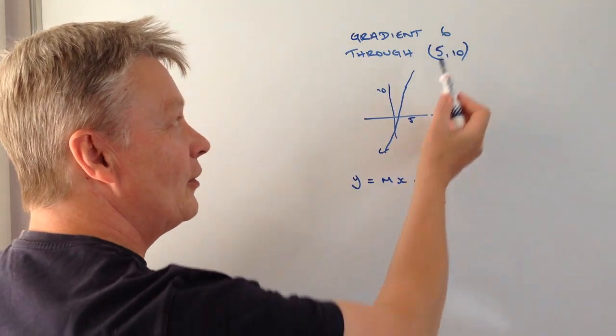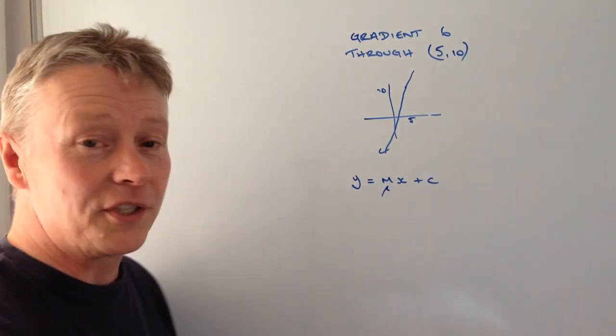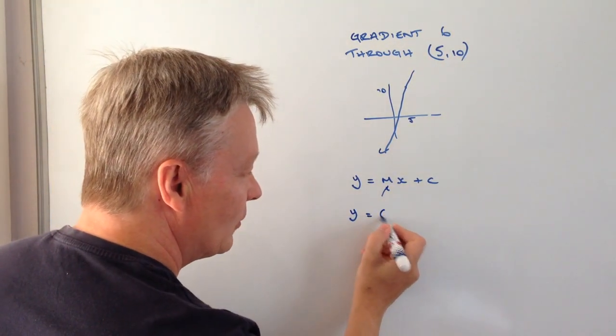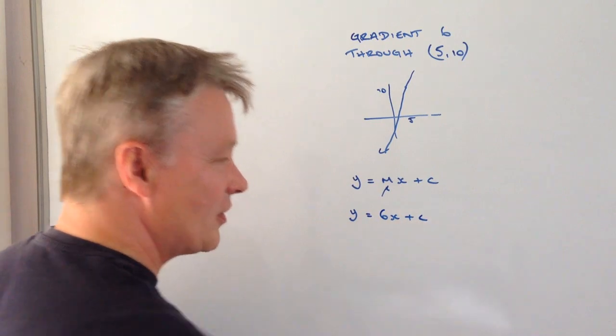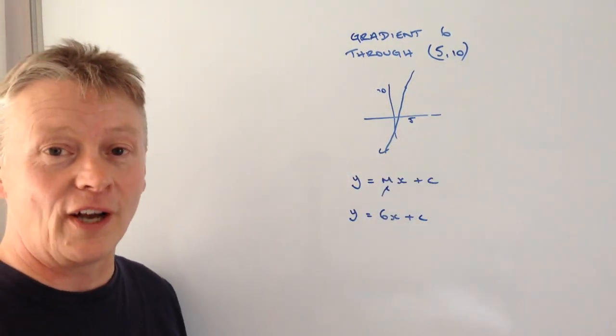Well the first thing is that we know the value of six, well that's this value here which is the gradient. So I could write y equals six x plus c. The other thing we know is that it goes through this point, five and ten.